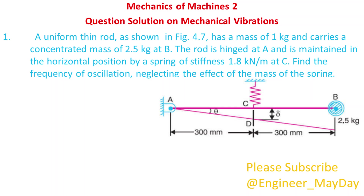A uniform thin rod, as shown in figure 4.7, has a mass of 1 kilogram and carries a concentrated mass of 2.5 kilograms at B. The rod is hinged at A and is maintained in the horizontal position by a spring of stiffness 1.8 kilonewtons per meter at C. Find the frequency of oscillation, neglecting the effect of the mass of the spring.